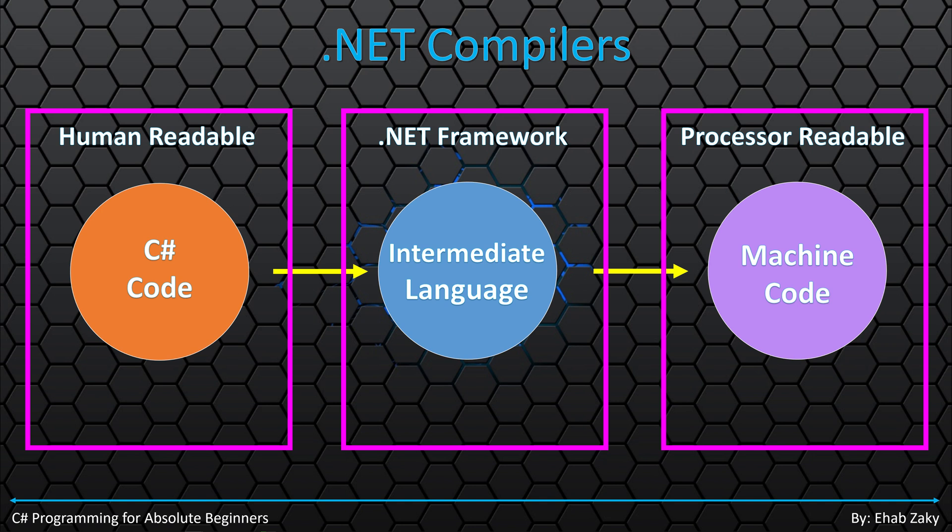This process applies to all .NET languages as well. Hence, any application developed under .NET will be compiled at the end to IL language code. At runtime, this code will be compiled again to machine code and executed by the CLR.